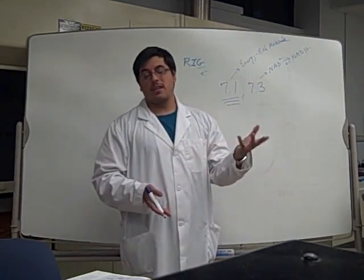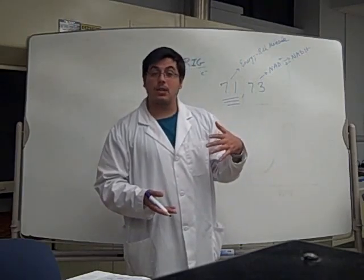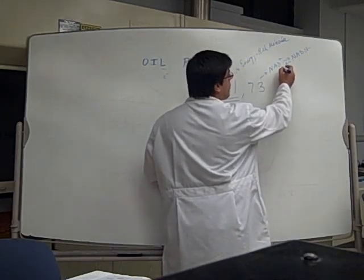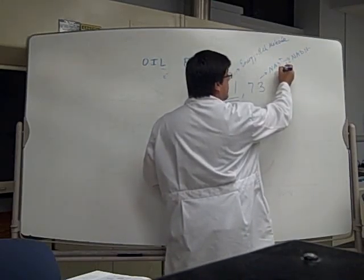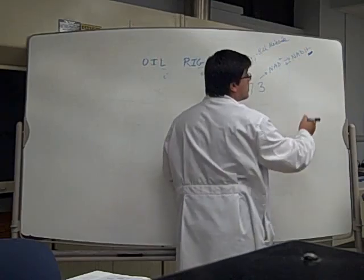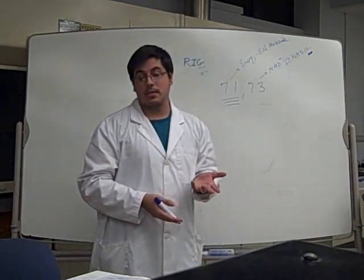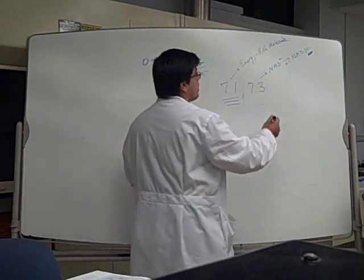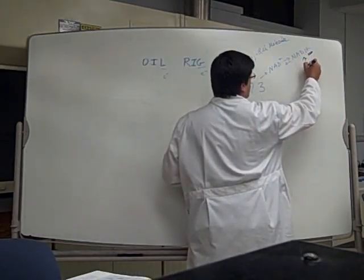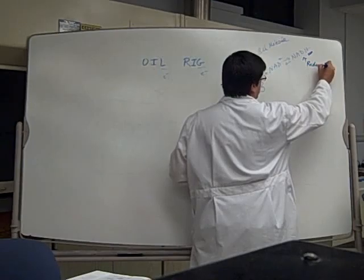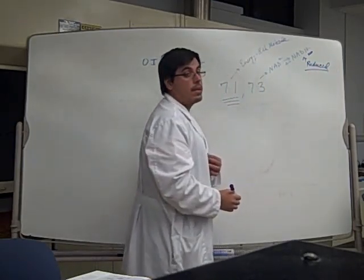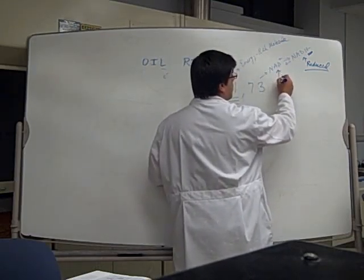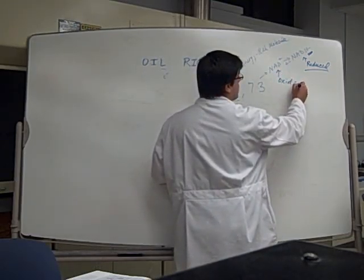You can think of it as gain in electrons or gain in hydrogens—it's the same general concept. Here we have no H; there we have an H. The H is the one that's reduced. This is the reduced form of nicotinamide, the NADH. The oxidized form is NAD+.